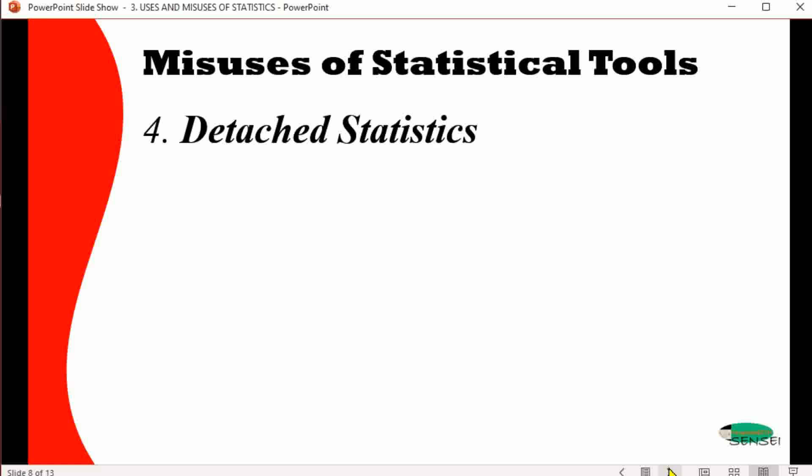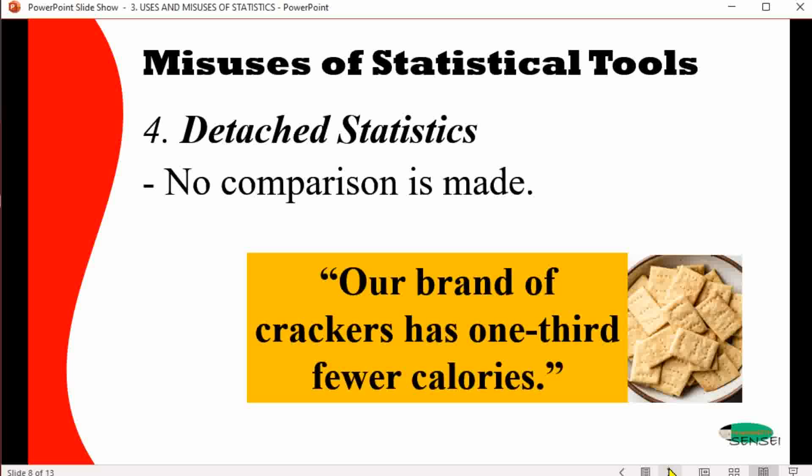Next we have detached statistics. The meaning of detached statistics is there's no comparison really being made. For instance, you claim that your brand of cracker has one-third fewer calories. What is your comparison? Is it your previous formulation or is it a different cracker company? Not really. But it seems like you're using statistics here, and since there is that statistical appeal, you would feel that oh okay, one-third good. But not really because there's no certain comparison. The only way to do so is when you can present side by side the formulation of these crackers.